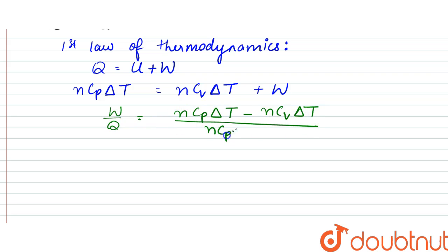by n cp delta t. So this would be equal to cp minus cv by cp. That is equal to one minus cv by cp.